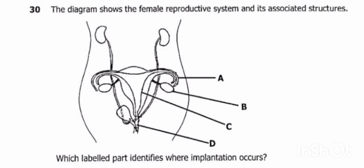Implantation is the attachment of the zygote to the uterus. We need to identify the part which represents the uterus, and that is Part C — that's where implantation occurs.